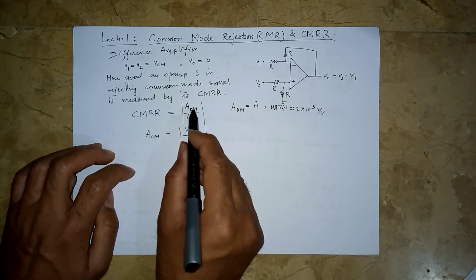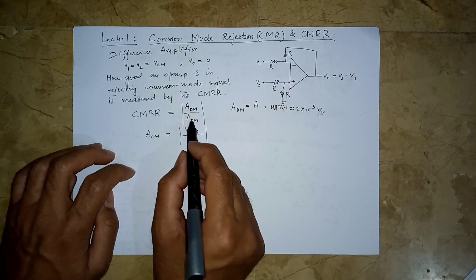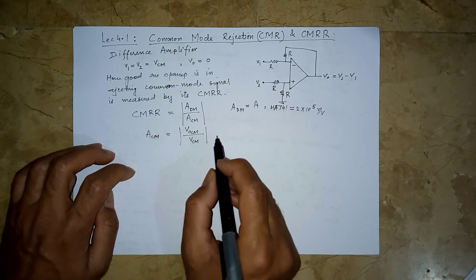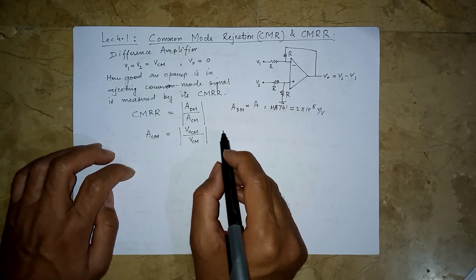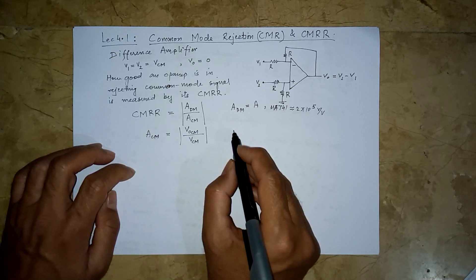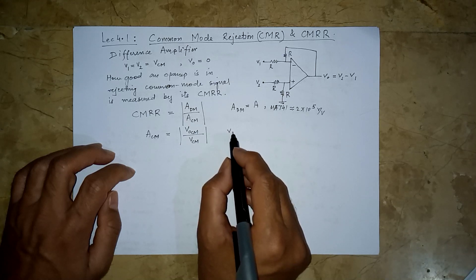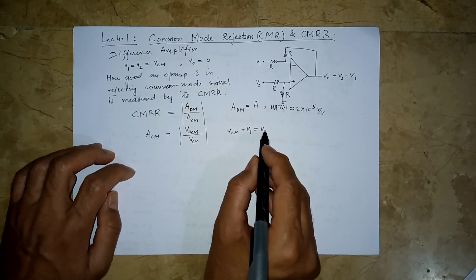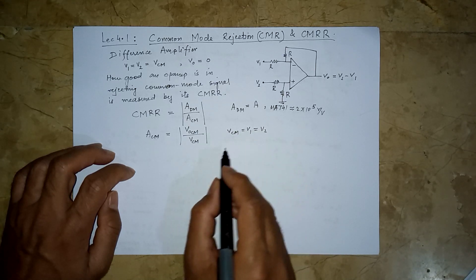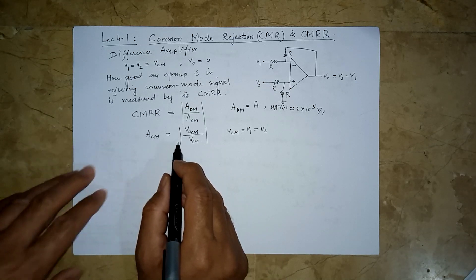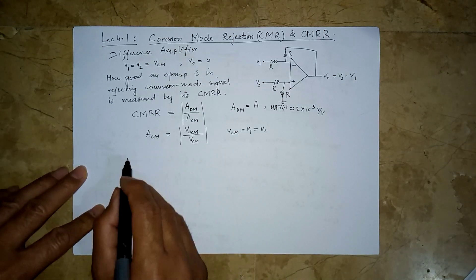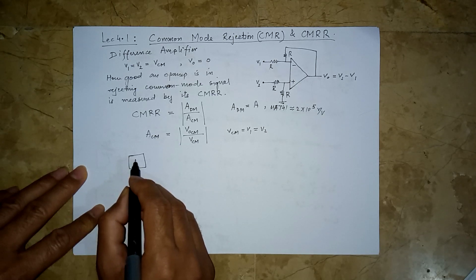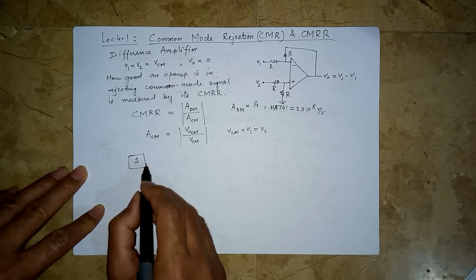A small output divided by the large input gives Acm as a small value. A large Adm divided by a small Acm means CMRR is expected to be a very large value. Remember, for common mode the condition is v1 equals v2 — both inputs must be the same.